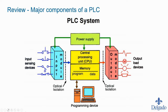We have our input modules and our outputs — basically, what are we sensing from the plant floor or the process, and what are we controlling as a result? We sense various inputs, our program processes that information, and our logic determines what outputs we turn on to control the process.